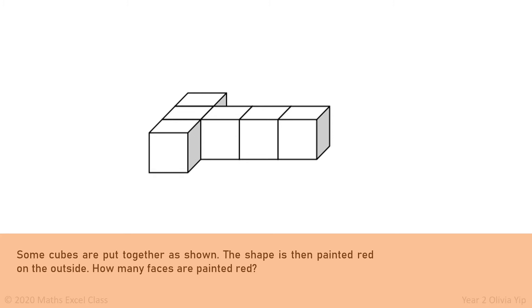First we find out how many faces one cube has. One cube has six faces. Then we find out how many cubes there are altogether. There are six cubes. So we write six times six. Six times six equals thirty-six.